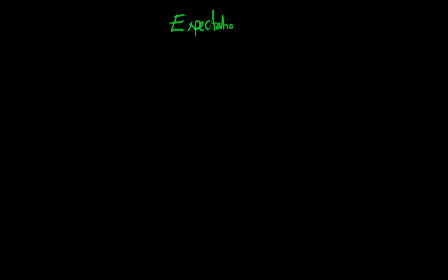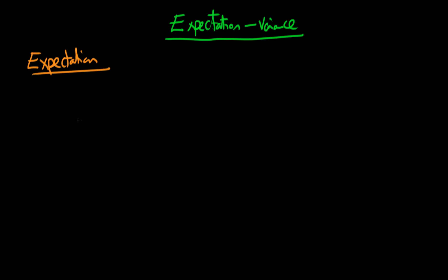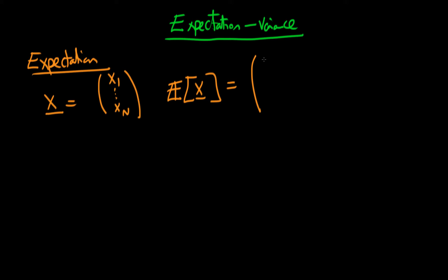In this video I'm going to talk about what it means to take the expectation and the variance of a vector, because now we're generalizing our result from that of a scalar to that of a vector. If we think first of all about what it means to take the expectation of some random vector — let's call it x — composed of components x1, x2, all the way through to xn. The expectation of that random vector x is defined as the vector composed of the expectations of each of its elements: the top element is E[x1], the second is E[x2], continuing down to E[xn].